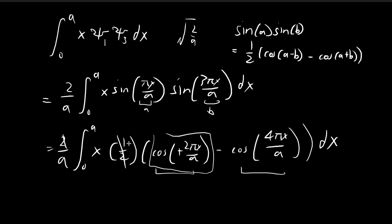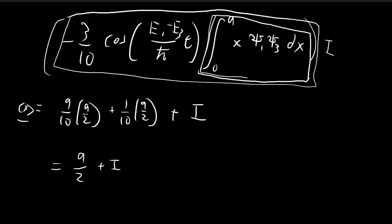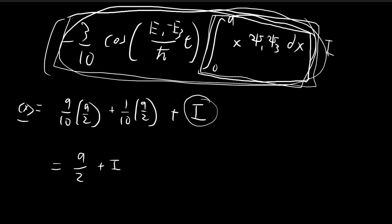Since both integrals of x·cos(2πx/a) and x·cos(4πx/a) equal zero, the entire cross term integral I is equal to 0. That means I = 0, and so the expected value of x is simply equal to a/2.